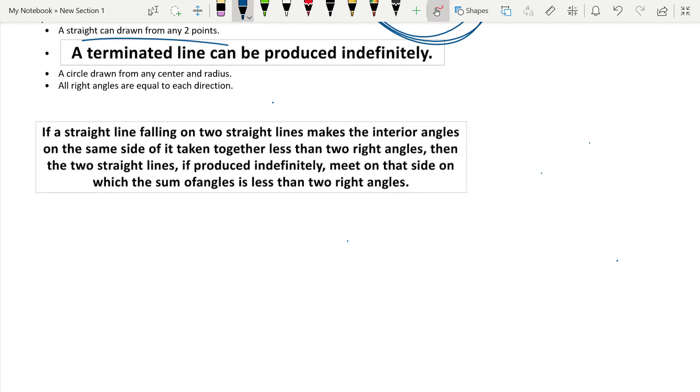Now, this is the important one. If a straight line falling on two straight lines makes the interior angles on the same side of it taken together less than two right angles, then the two straight lines if produced indefinitely meet on that side on which the sum of angles is less than two right angles. Okay, this might sound complicated, but let me make it easy.